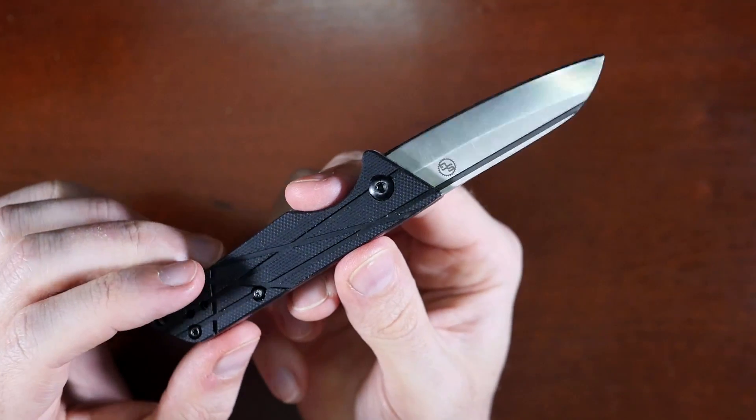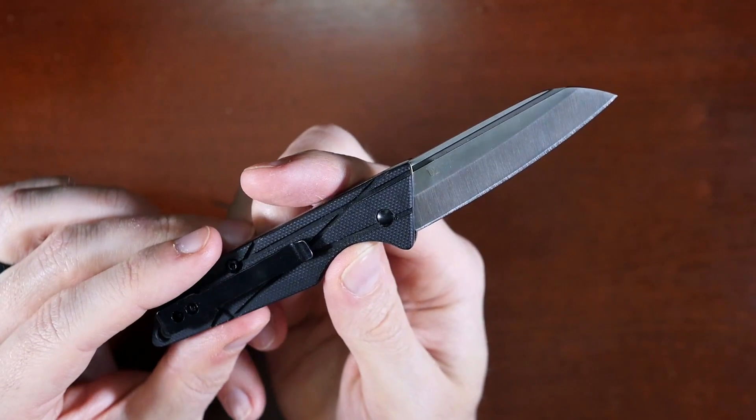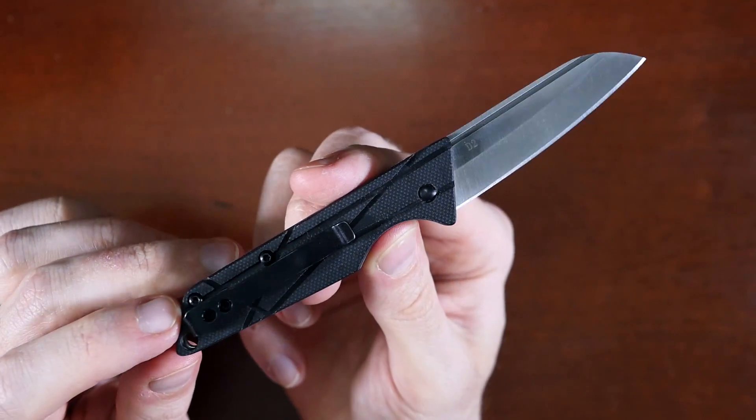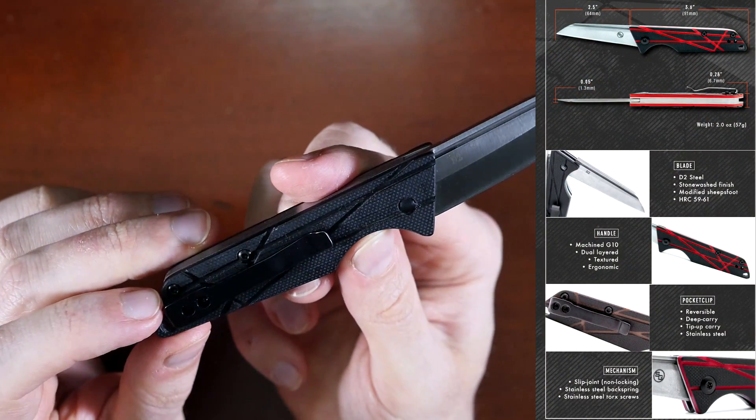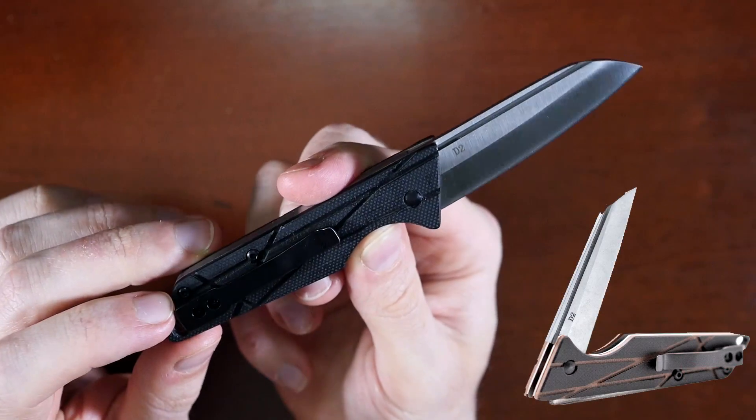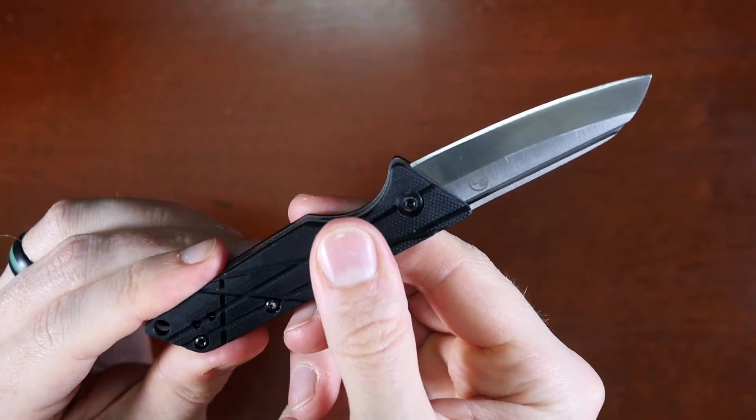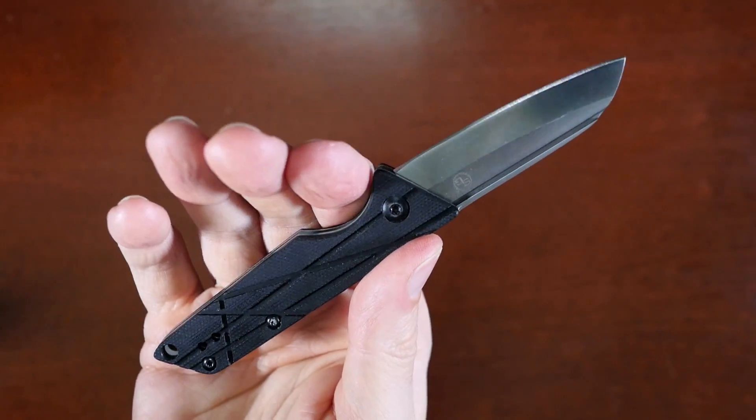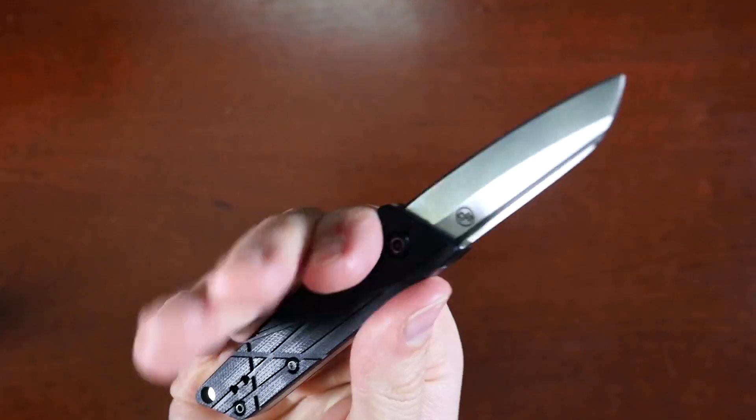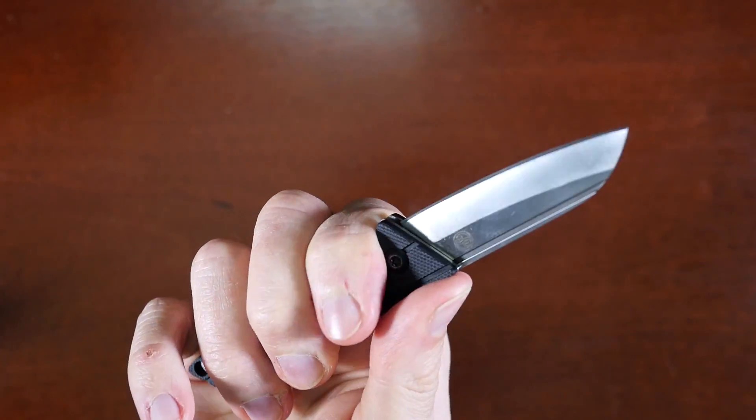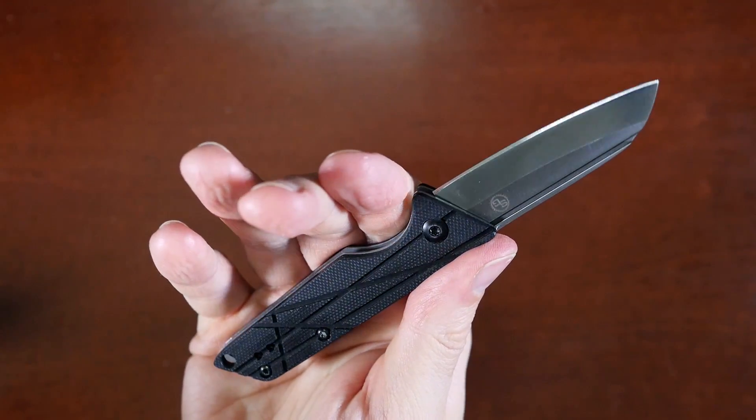The handle scales are made of G10. And then you've got two layers. On this one, this is black on black. There is a much nicer looking version that has red underneath the black, and there's also a brown and black version. The handle scales are textured, and the lines also add some traction. This is overall a very comfortable handle in the hand, and I like the generous finger choil here. And it's enough for three fingers to wrap around. It is fairly short, but you do get quite a good grip on it.